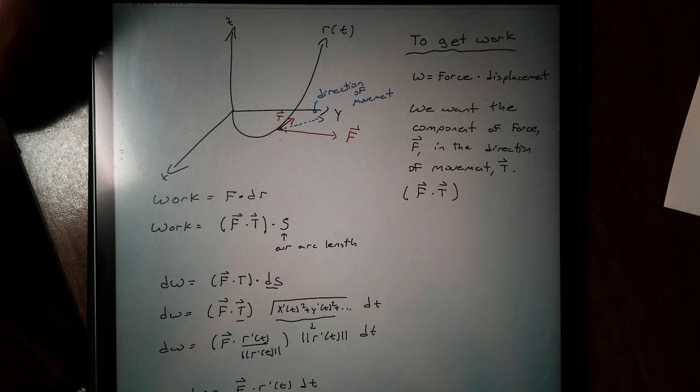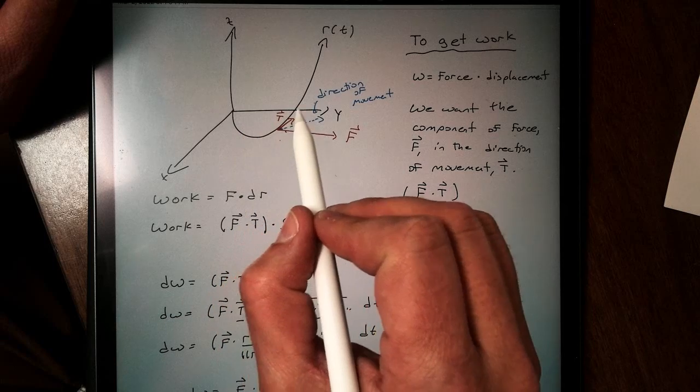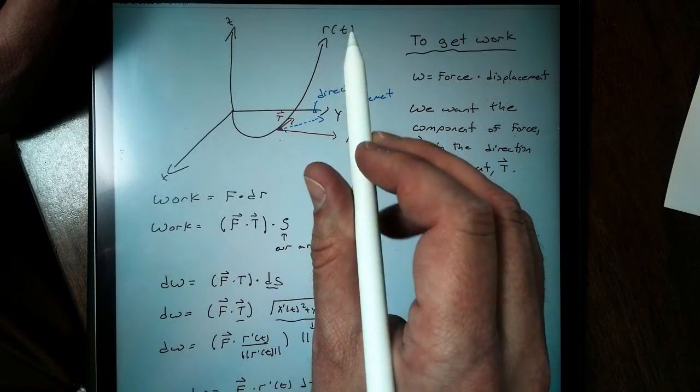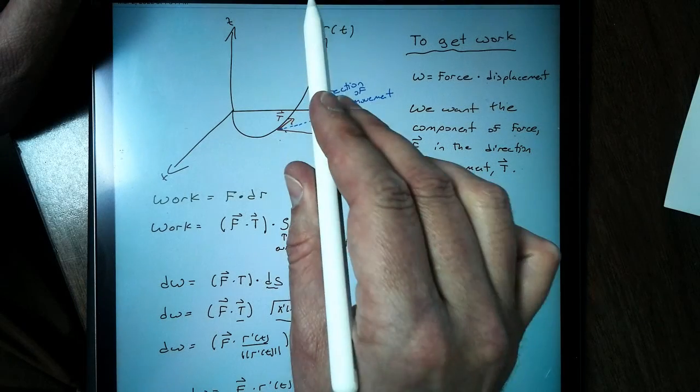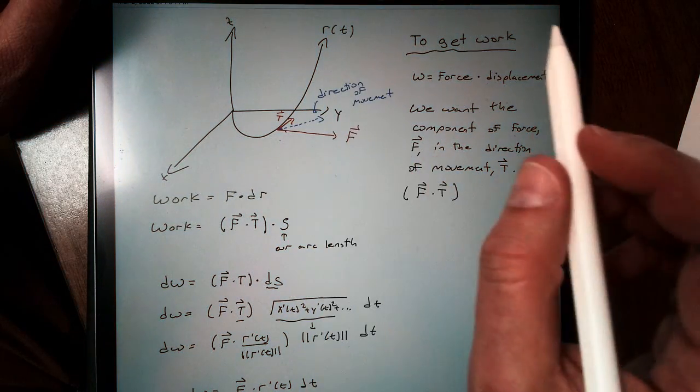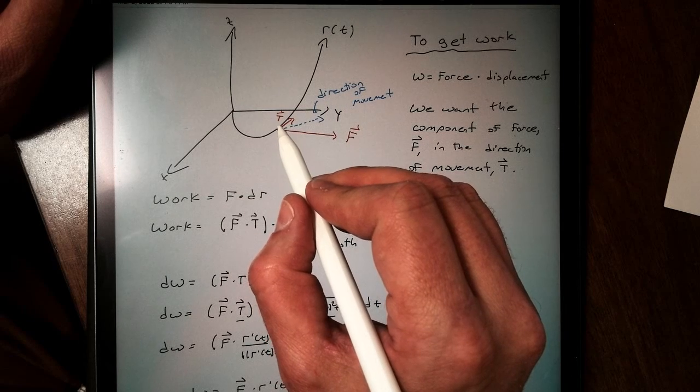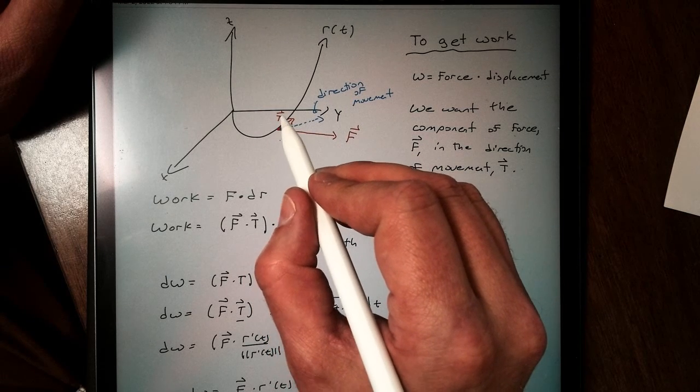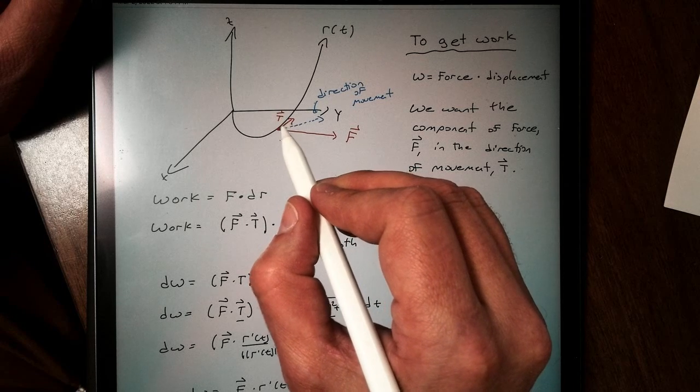So let's imagine we are a particle traveling along this curve, represented by a parametric function. You'll want these to be parametric, otherwise these get really kind of complicated. Now, at any given point, our path is going to be tangent to the curve, and we're going to represent that tangent by the unit tangent vector t.